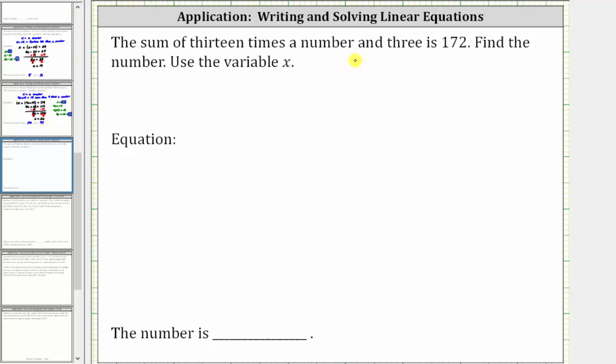The sum of 13 times a number and three is 172. Find the number and use the variable x. Let's let x equal the number.